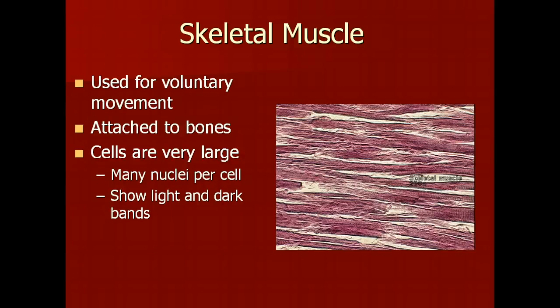Another way you can identify skeletal muscle, in addition to the many nuclei per cell, is that skeletal muscles show striping — light and dark bands.